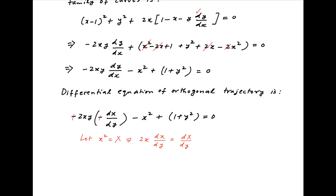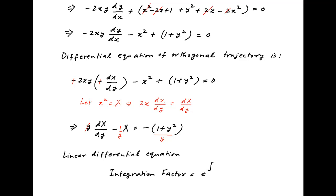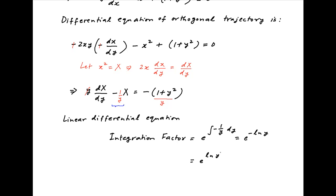Substituting this, the differential equation of the orthogonal trajectory is y times dX/dy minus X is equal to minus of (1 plus y square). Dividing both sides by y gives a linear differential equation. The integrating factor is e raised to the power of the integral of minus 1 upon y dy, which equals e raised to minus ln y, which equals 1 upon y.